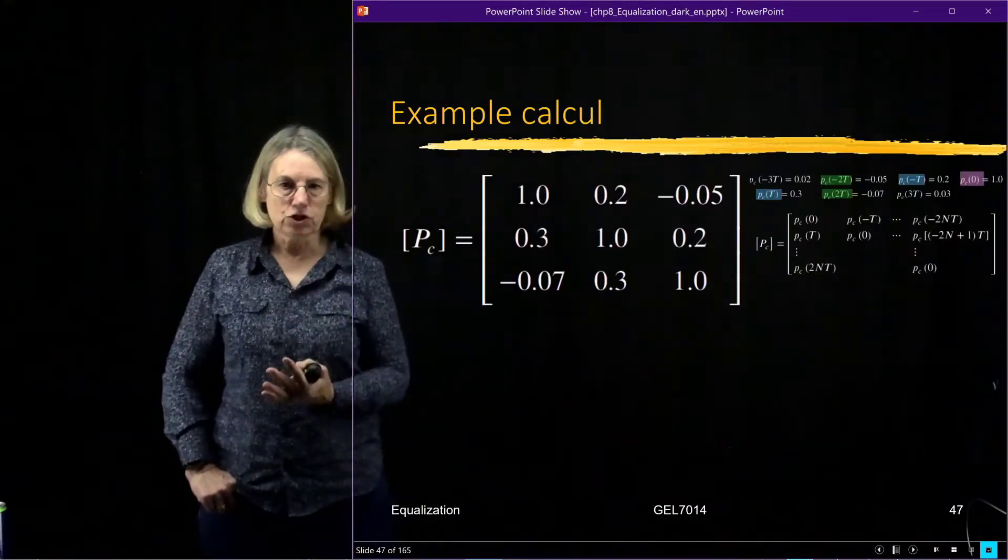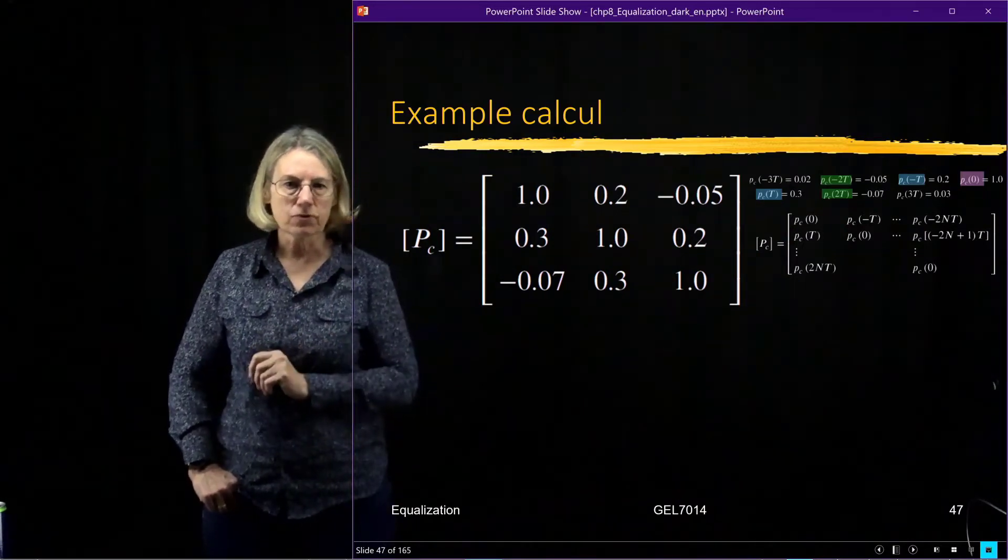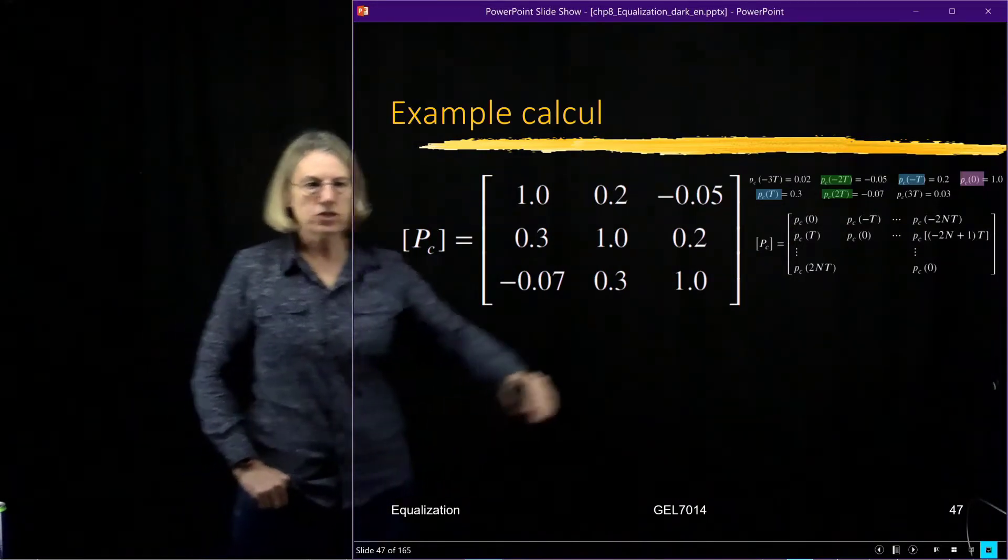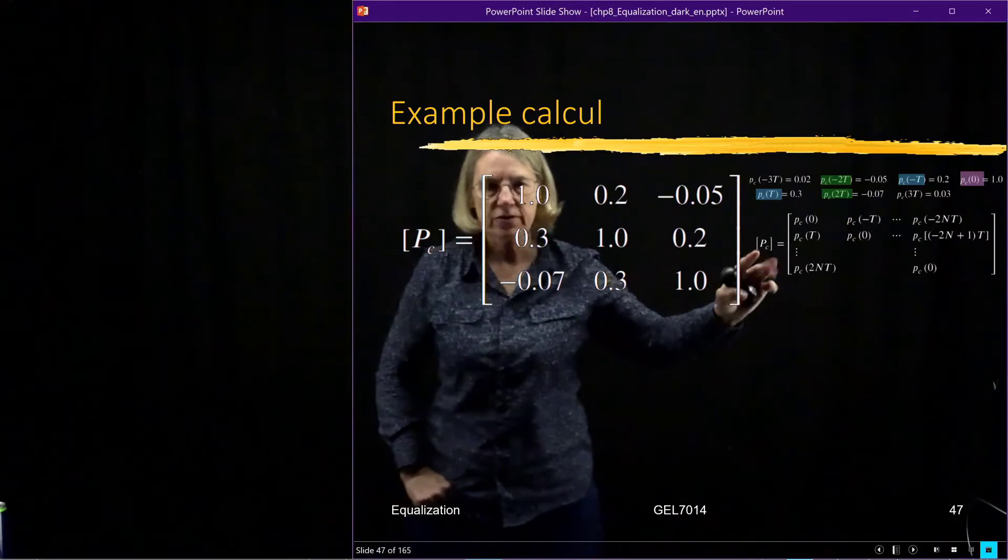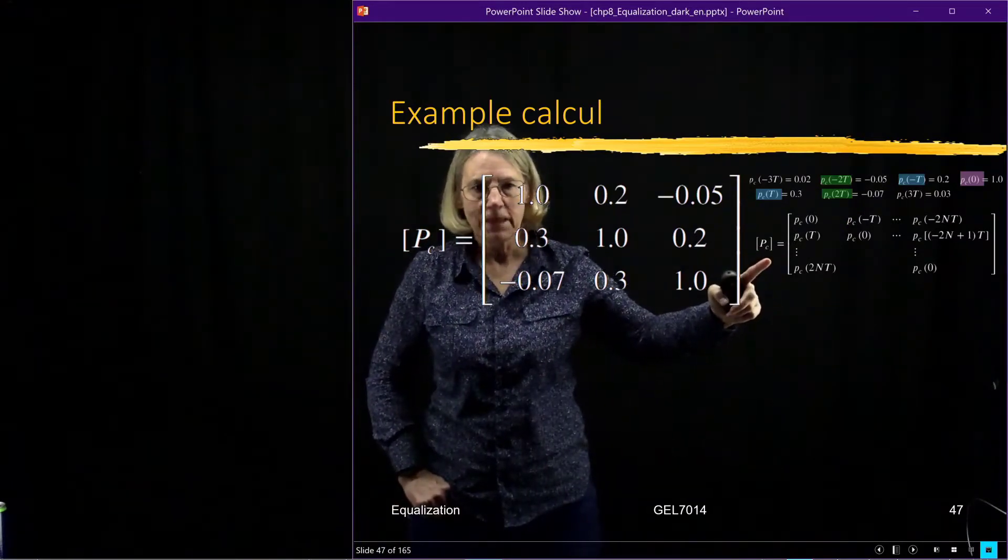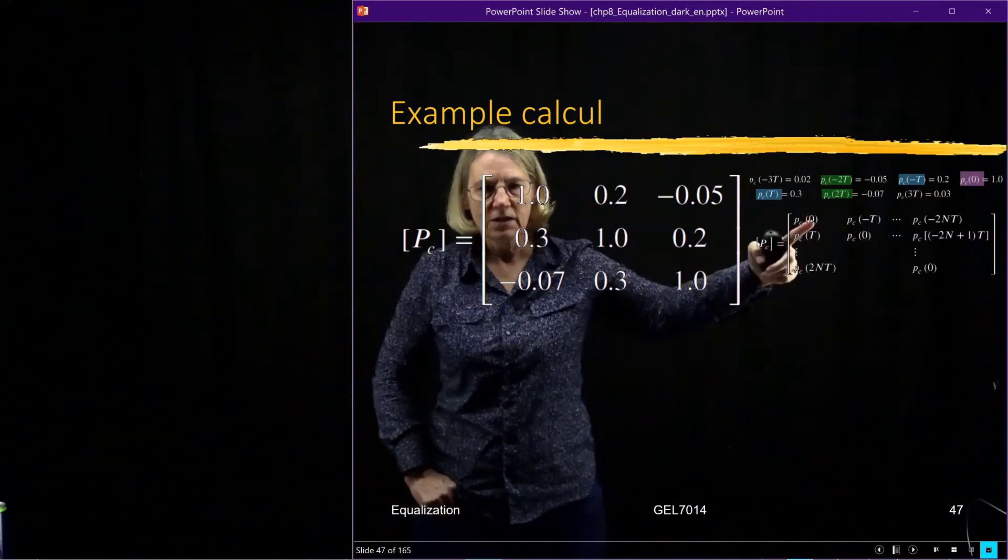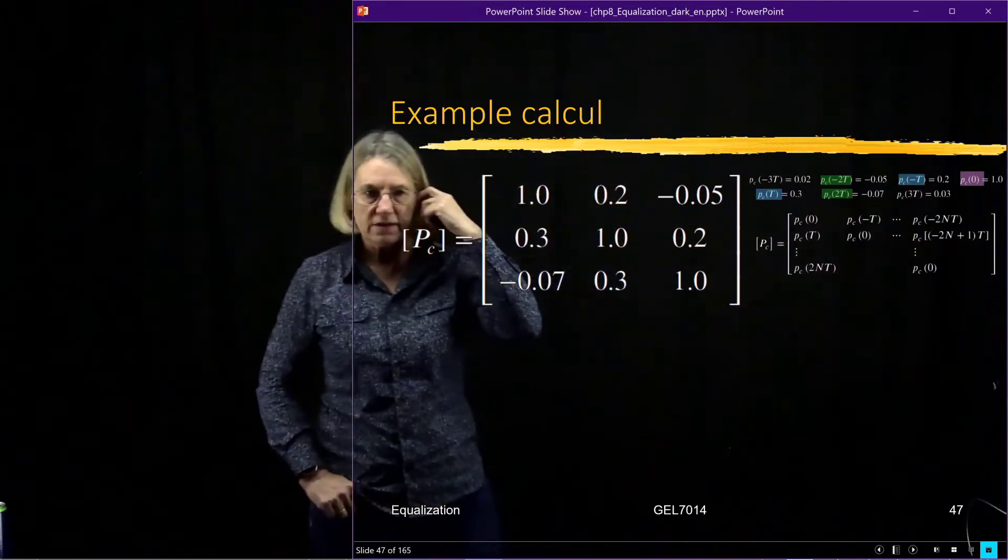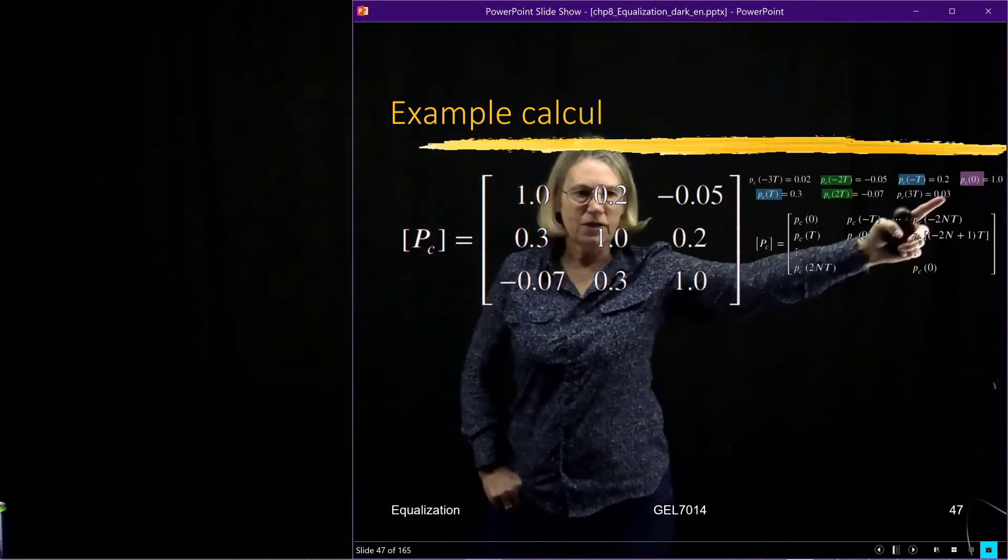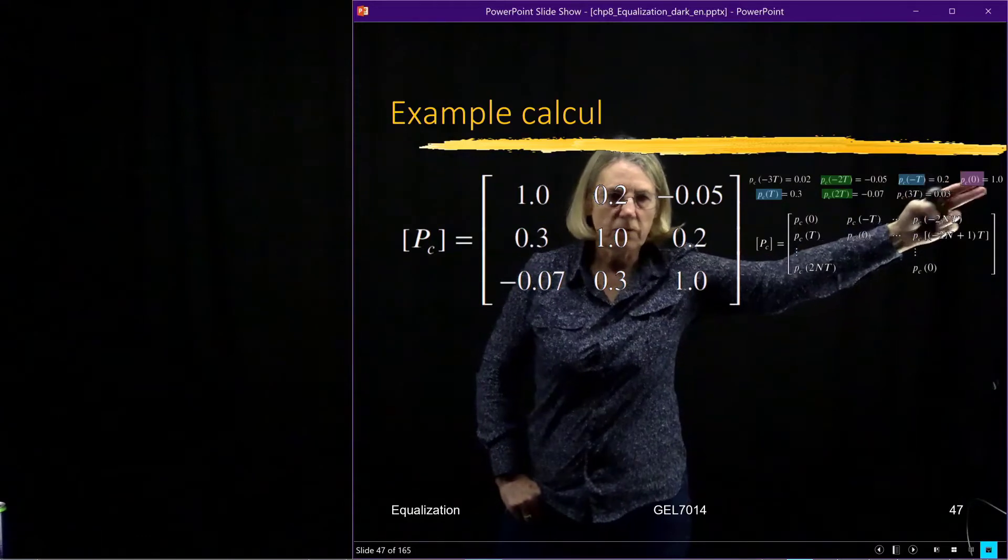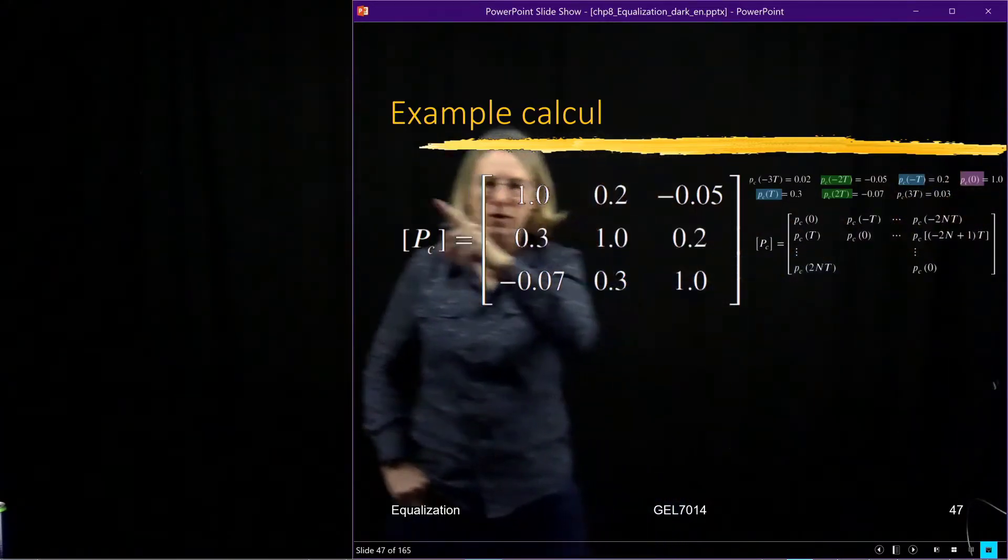So the first thing I'm going to do when I try to construct my zero-forcing equalizer is construct this matrix for the channel. Remember on the diagonal was the main path on the desired one, so that would be—you can see it here in purple—it's the value of 1, and you can see that's the value that we see here.